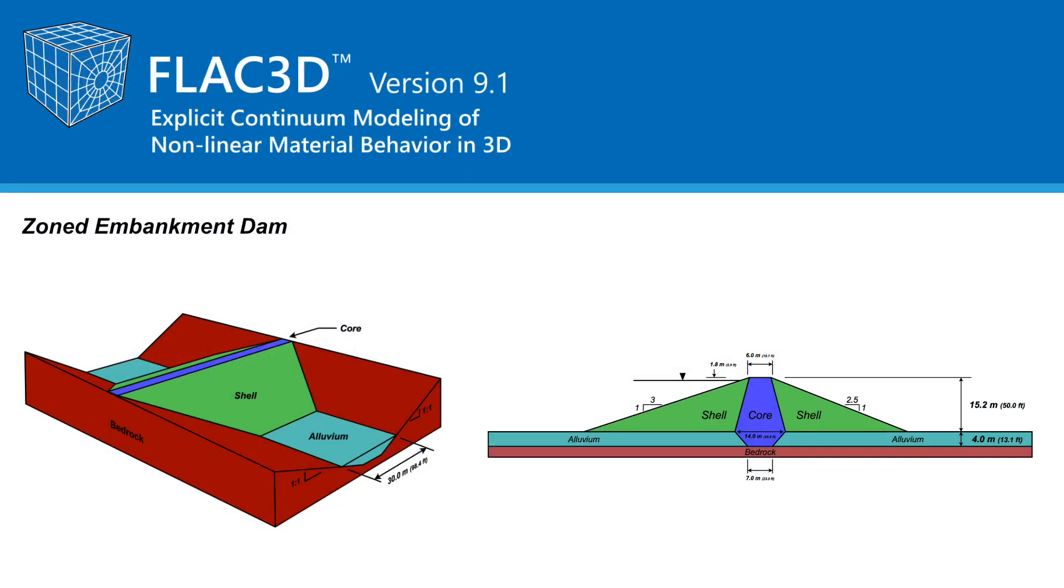The problem analyzed in this course is that of a zoned embankment dam, 15.2 meters in height, with a 3 to 1 upstream slope and a 2.5 to 1 downstream slope. The reservoir level to be modeled is 1.8 meters below the crest. The impervious cohesive core extends down to the bedrock whereas the shells are underlined by a 4 meter thick layer of cohesionless alluvium. The alluvium width at the surface is 30 meters. The bedrock abutment rises from the canyon base at 1 to 1 slopes.